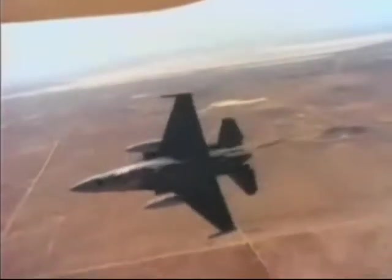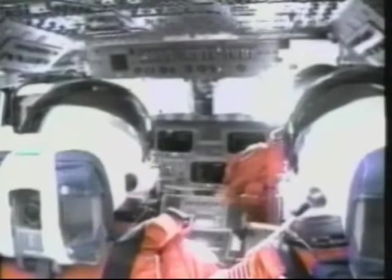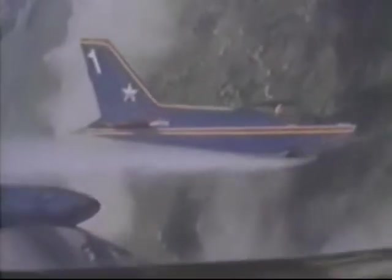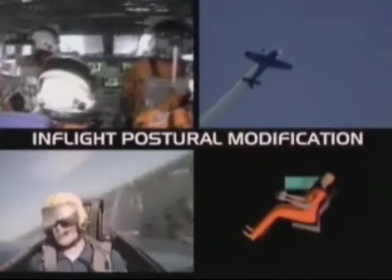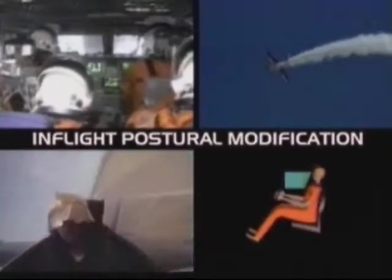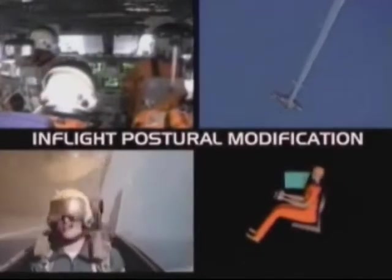In-flight postural modification is another technique that increases tolerance to positive vertical G's. Astronauts sit in a reclined position lying on their backs during a shuttle launch. The F-16 aircraft has a 30-degree tilt-back seat to reduce the effects of positive vertical G's acting on the body during in-flight maneuvering. Aerobatic pilots fly airplanes with seats that tilt back and have rudder pedals moved forward and upward to elevate the position of the legs and feet relative to the upper body. All of these seating positions allow astronauts, fighter pilots, and aerobatic pilots to decrease the vertical distance from the heart to the brain, thereby helping to maintain adequate blood supply.